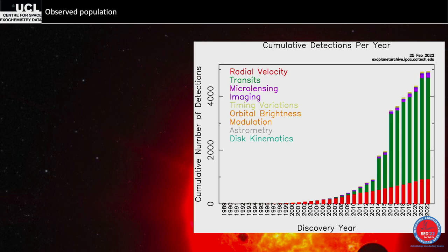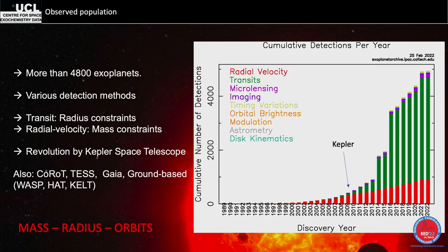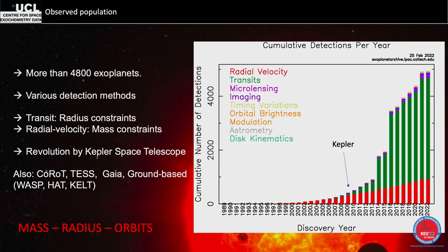What happened in 2009 that jumped detections from about 400 up to 5,000 now? The revolution was Kepler. We now know more than 4,800 planets detected by various methods, mainly transit and radial velocity. These two methods are complementary: transit gives us the radius, and radial velocity gives us the mass. Other space telescopes include Corot, TESS, and Gaia.